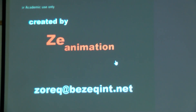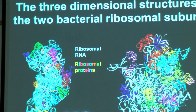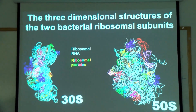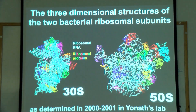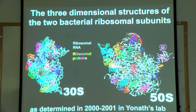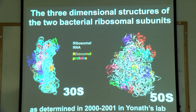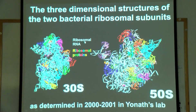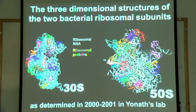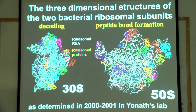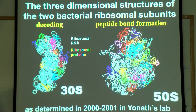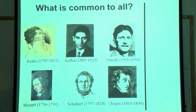What we saw in the movie was rather schematic, but actually we know the position of each and every atom in the ribosome. The small subunit sediments at 30S and the large at 50S. The ribosome is made of many components — the main one is ribosomal RNA, another RNA molecule, and many ribosomal proteins. The small subunit does the decoding and the large subunit is for peptide bond formation.